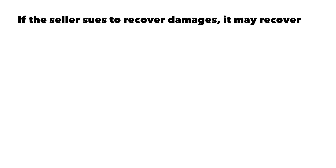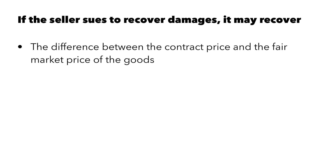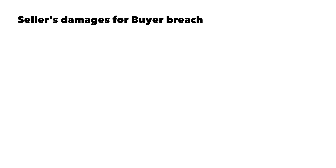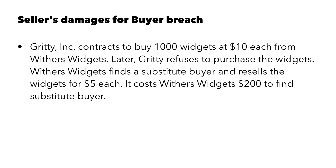We'll start with a buyer breach and the calculation of seller's damages. If the buyer breaches and the seller sues to recover money damages, it may recover the difference between the contract price and the fair market price of the goods, plus any incidental damages. So let's look at a situation: Gritty Inc. contracts to buy a thousand widgets at $10 each from Withers Widgets. Later, Gritty refuses to go through with the purchase. Withers then finds a substitute buyer and resells the widgets for $5 each. It costs Withers Widgets $200 to find a substitute buyer.